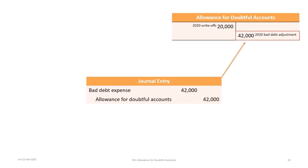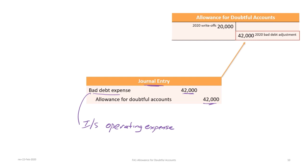The journal entry to record bad debt expense is a debit to bad debt expense for $42,000 and a credit to allowance for doubtful accounts for $42,000. The bad debt expense sits on the income statement as an operating expense, and would likely best be classified as a selling expense since it is related to sales activity.